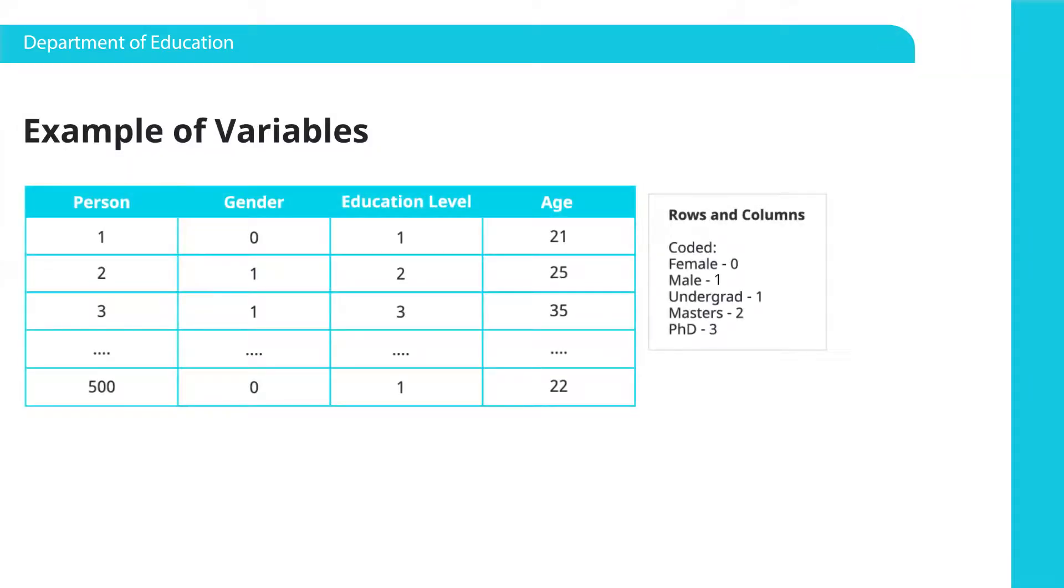So some examples of variables. This is what a data set looks like. If you've never seen a data set, this is what it will look like. This is a variable, this is a variable, this is a variable, and this is a variable. Do you see how this works? So the person is basically an identifier. You've given each of your participants a number. This is not necessary, but in this data set, the researchers decided that they'd like to number all their participants. So that's the person variable. The gender variable. Here we have 0, 1, 0, 1, 0, 1. So in this study, gender has been operationalized as male or female. So binary.